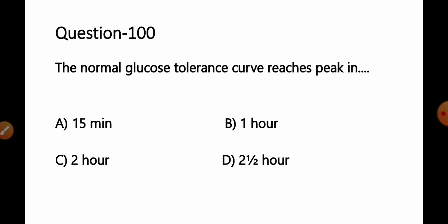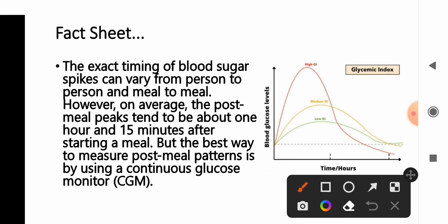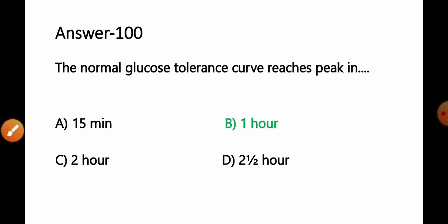Question 100: The normal glucose tolerance curve reaches peak in: A) 15 minutes, B) one hour, C) two hours, D) two and a half hours. Fact: The exact timing of blood sugar spikes can vary from person to person and from meal to meal. However, on average, the post-meal peak tends to be about one hour and 15 minutes after starting a meal. The best way to measure post-meal patterns is using a continuous glucose monitor and plotting it into a graph. Seeing the normal graph for sugar with subsequent time, you can see it peaks at about one hour. Option B, one hour, is the correct answer.